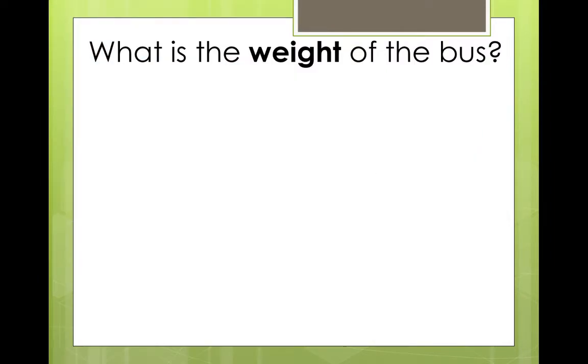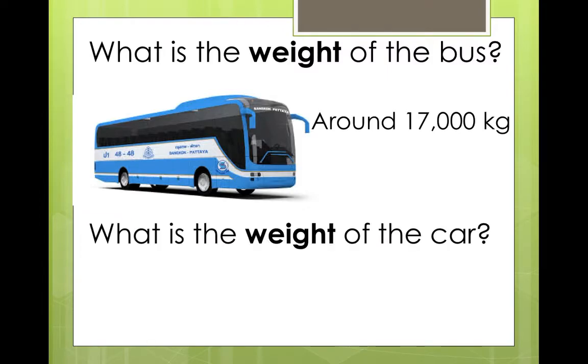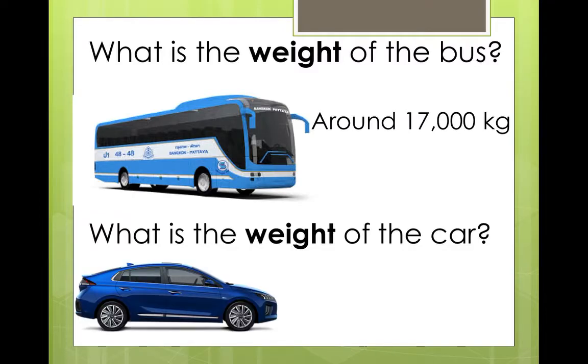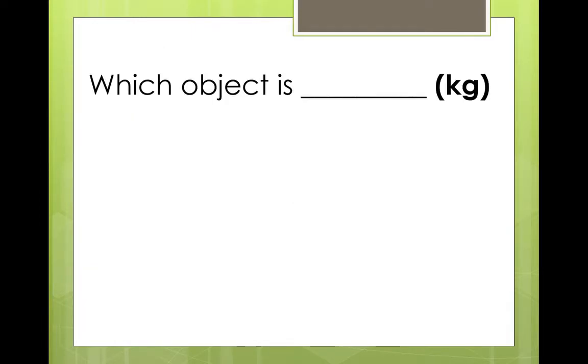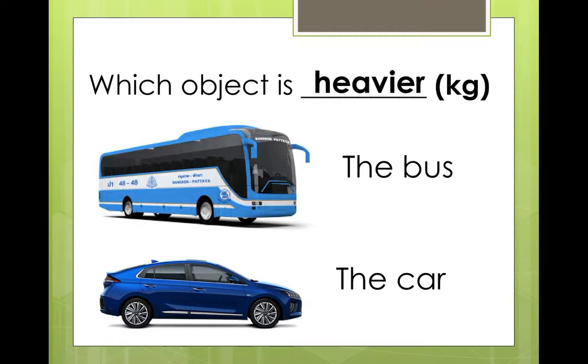What is the weight of the bus? In kilograms, what is the weight? Do you remember? It's around 17,000 kilograms. Whereas, what is the weight of the car? How many kilograms? If you guessed around 1,500 kilograms, then you were correct. Which object is heavier? Has more kilograms? The bus or the car? That's right, the bus is heavier.